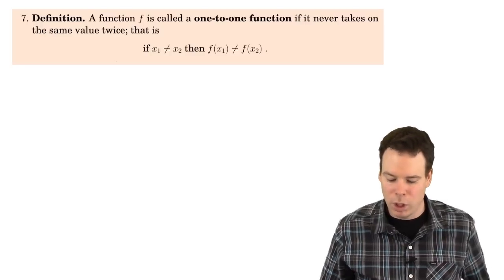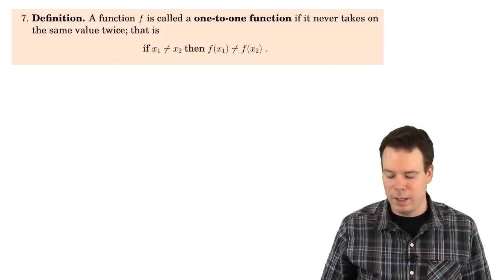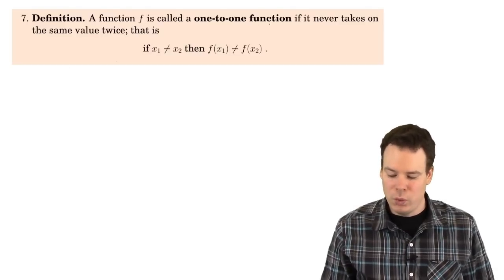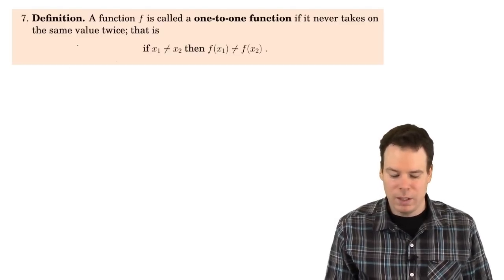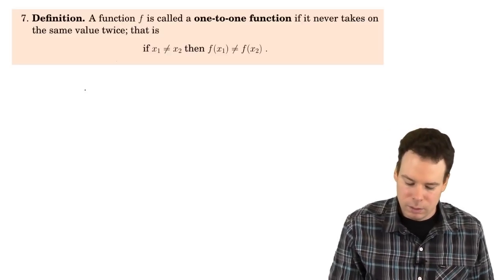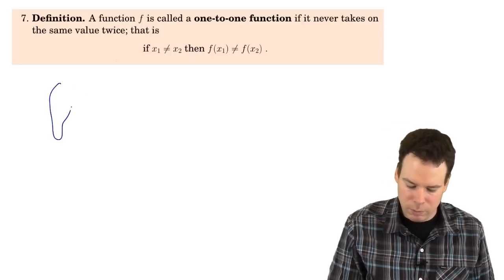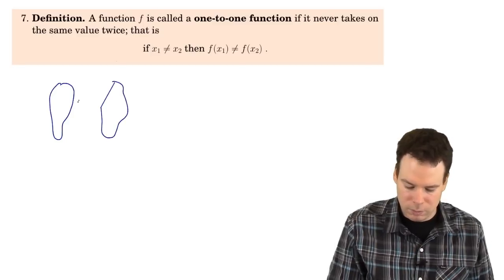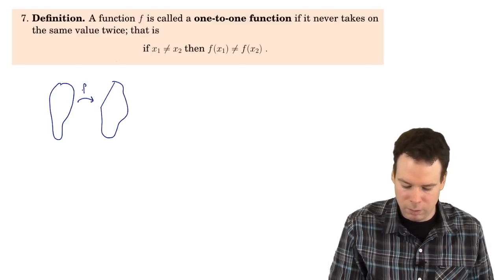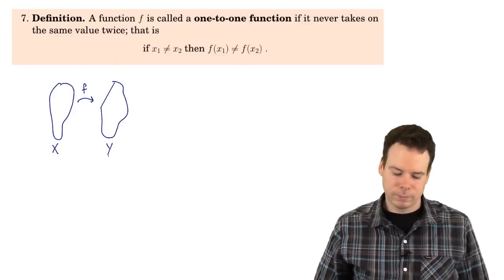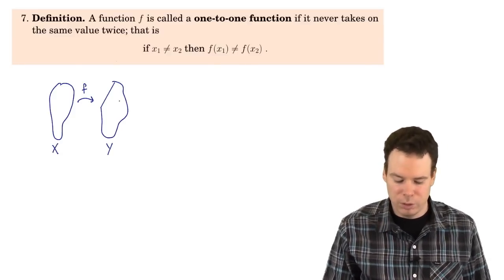Now I want to look at some properties that a function can have. The first one is: a function is called one-to-one if it never takes the same value twice. A nice way to visualize this is in terms of a function diagram. Here we have a function with a set of inputs and a set of outputs. The function takes inputs to outputs.